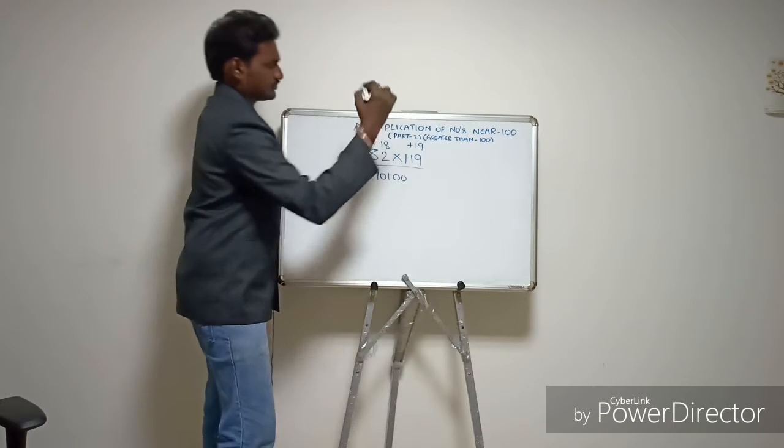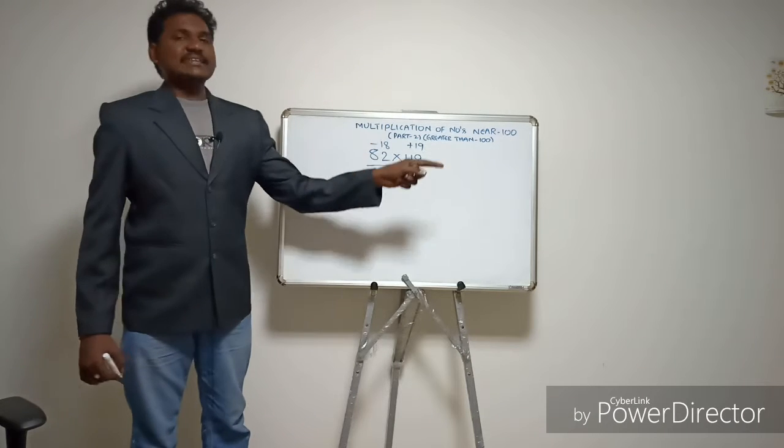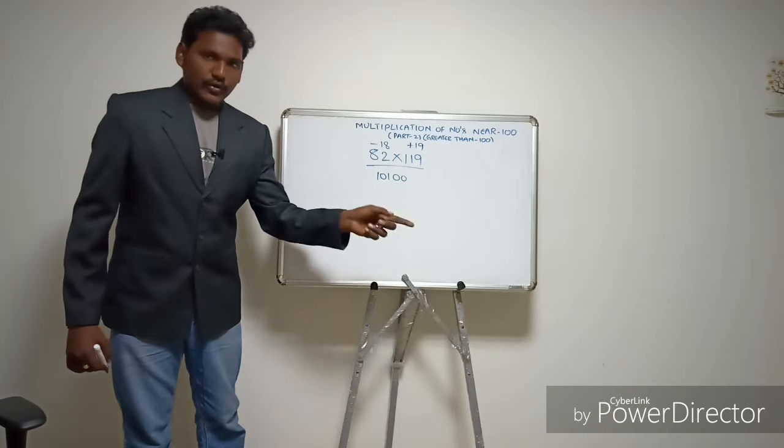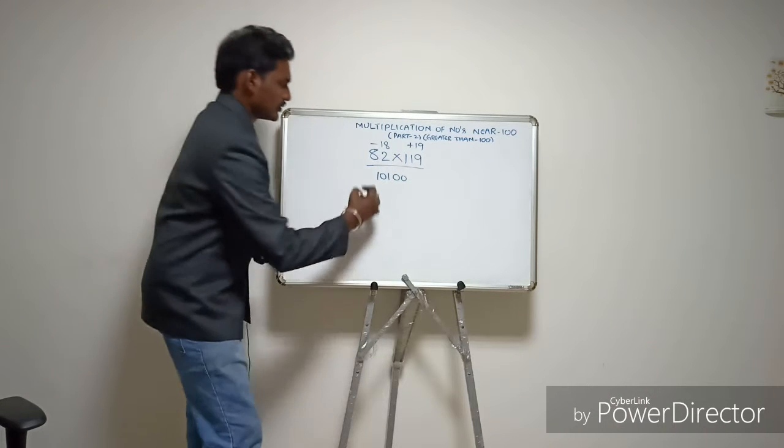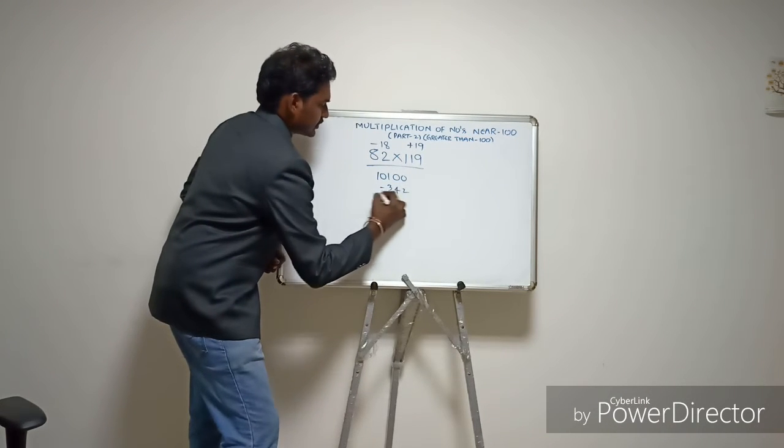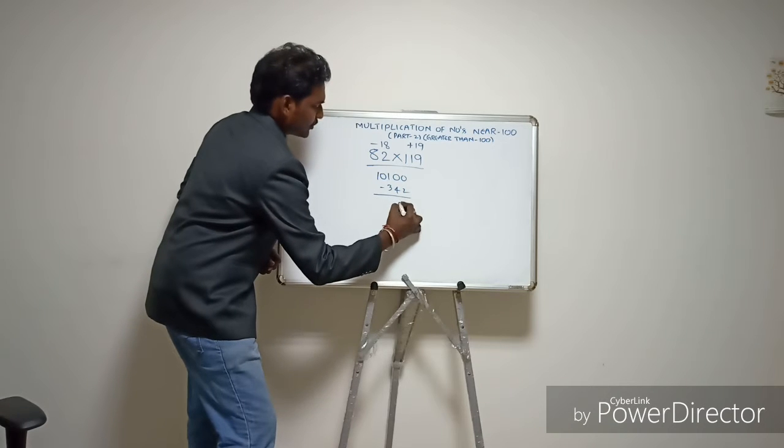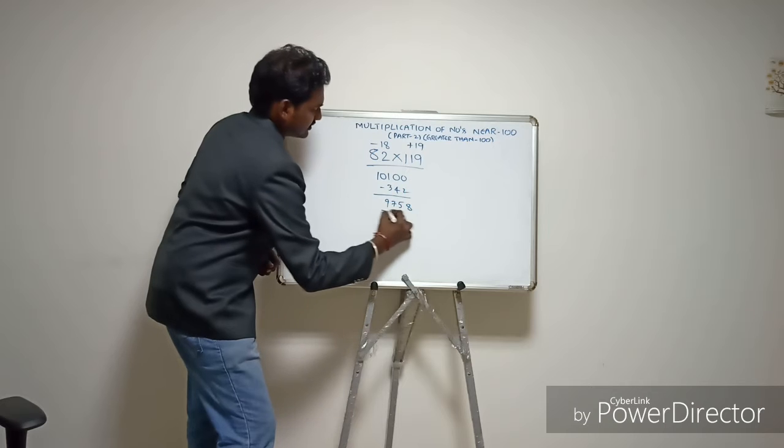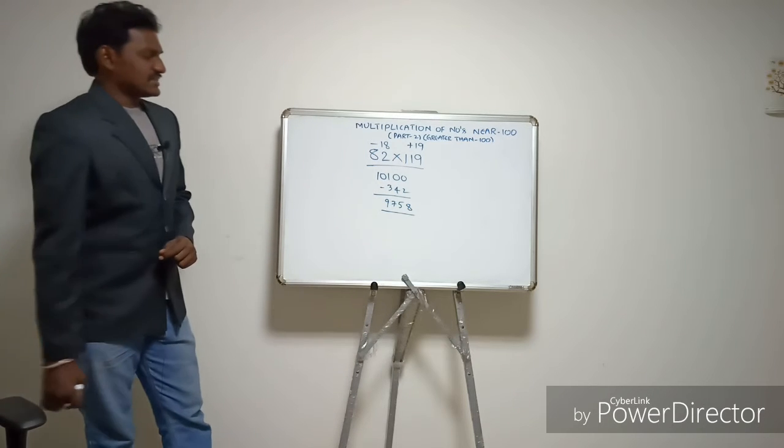Multiplying: 18 times 19 equals 342. Now carrying forward: 10 plus 2 plus 8, 9 plus 4 plus 5, 10 plus 3 plus 7. So the answer is 9,758.